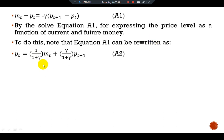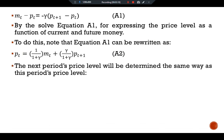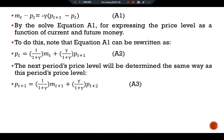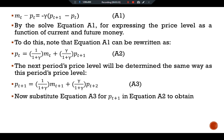This equation states that the current price level is a weighted average of the current money supply and the next period's price level. The next period's price level will be determined the same way: pt+1 equals (1 over 1+gamma) times mt+1 plus (gamma over 1+gamma) times pt+2.